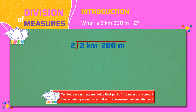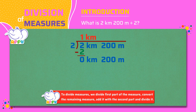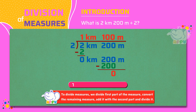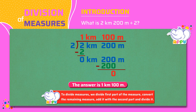2 divides 2 once. That is 1 kilometer. And 0 is the remainder. We bring 200 meters down. 2 divides 200 a hundred times. That is 200 meters. And 0 is the remainder. So the answer is 1 kilometer 100 meters.